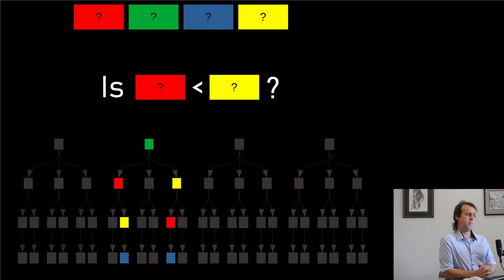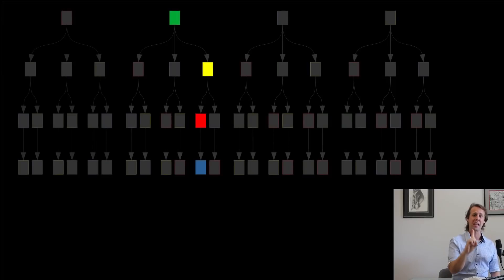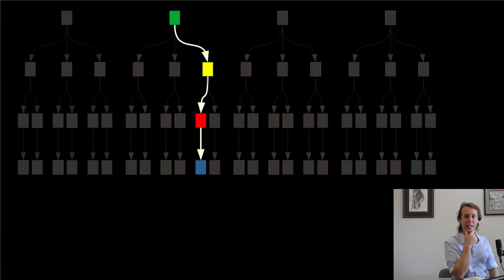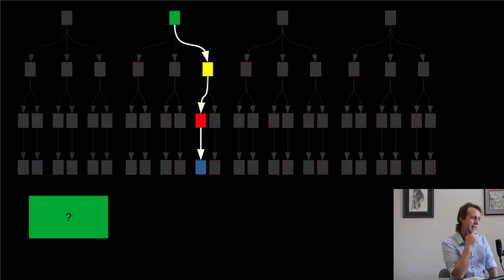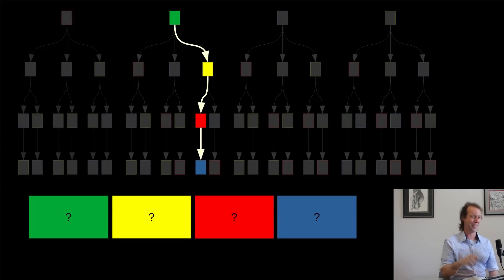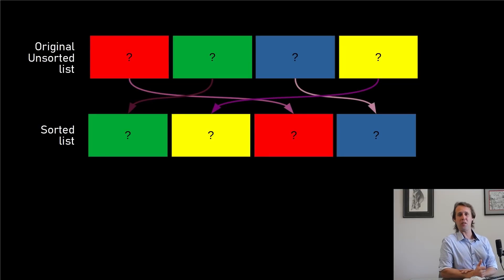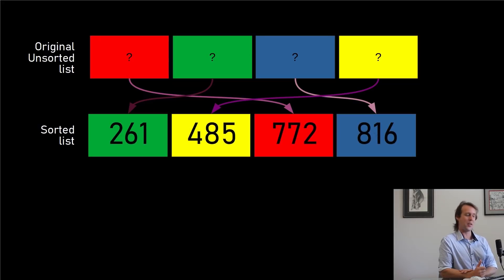Is red less than yellow? And the answer is no. Red is not less than yellow. Red is greater than or equal to yellow, which means that we can fill out our permutation tree completely. We have found the single sorted permutation from amongst n factorial permutations. The single sorted permutation of those boxes is. Drum roll please. Green, yellow, red, blue. And indeed, if we arrange the boxes in that order, and I reveal finally what the actual numbers in the boxes were, we see that the list is indeed sorted. 261 was the green box, 485 was the yellow box, 772 was the red box, and 816 was the blue box.